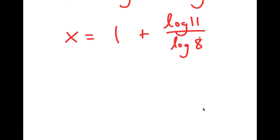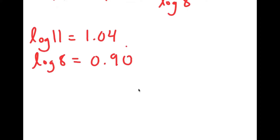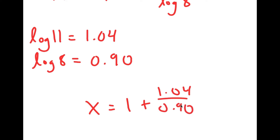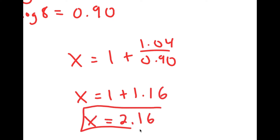Now all that's left is to plug in the actual values. Log 11 is approximately 1.04 and log 8 is approximately 0.90. So I get x is equal to 1 plus 1.04 over 0.90, which equals 1 plus 1.16, meaning x is equal to 2.16. So this is my answer.